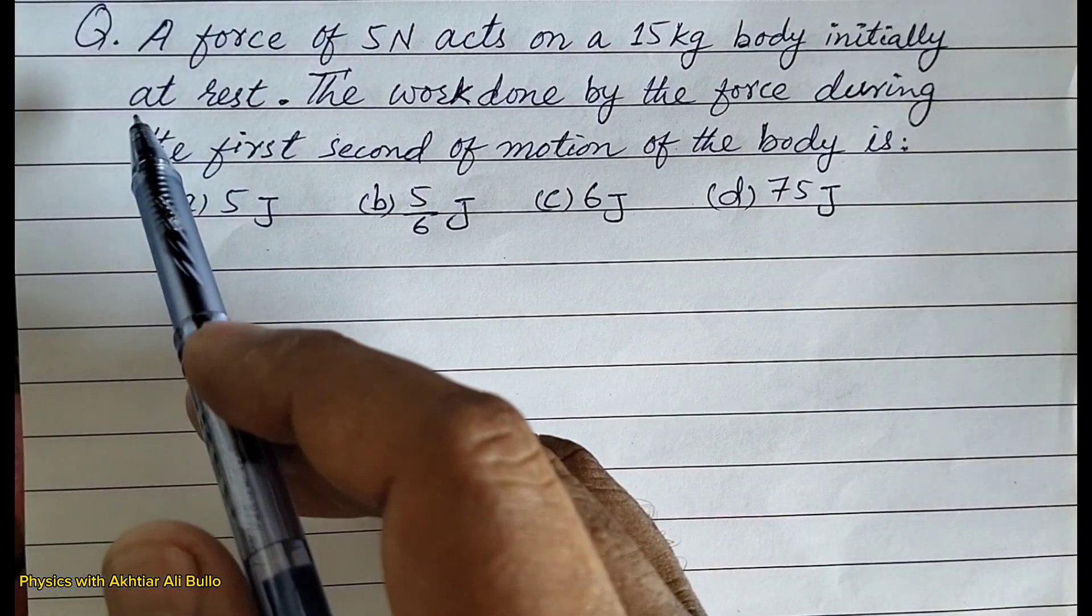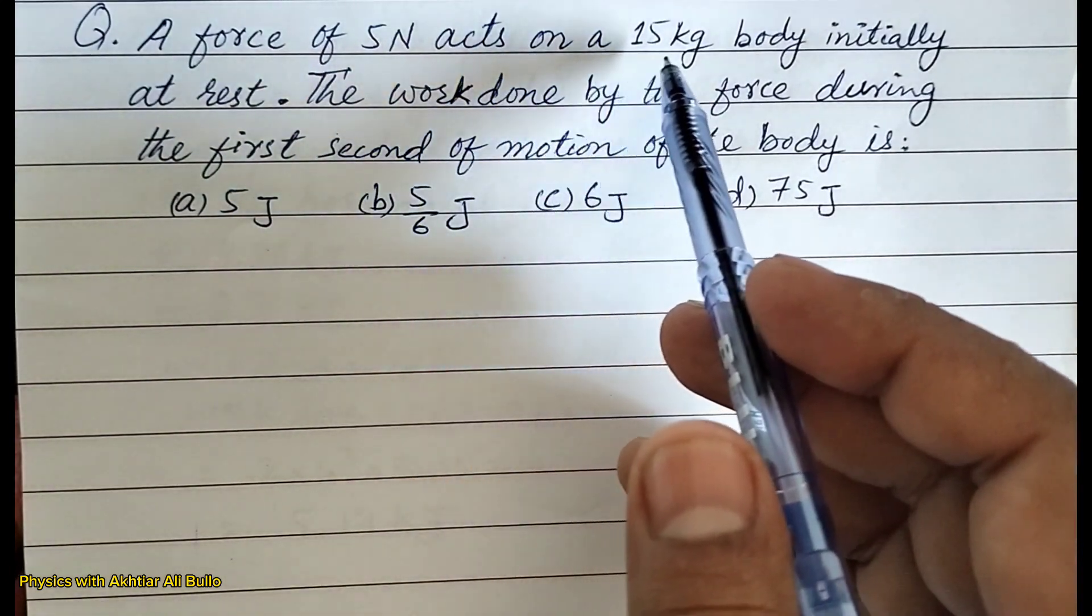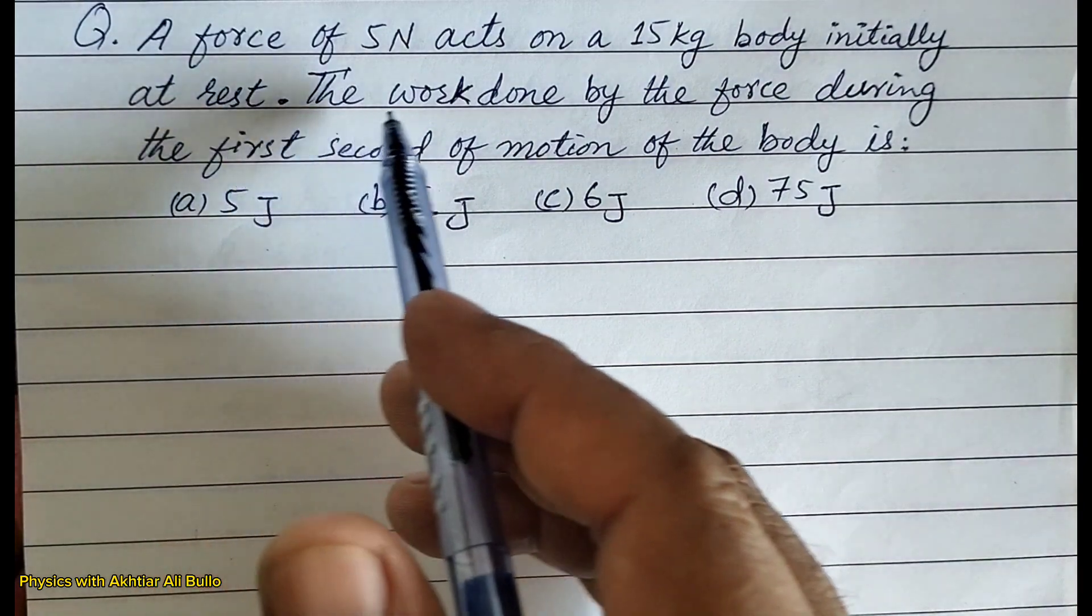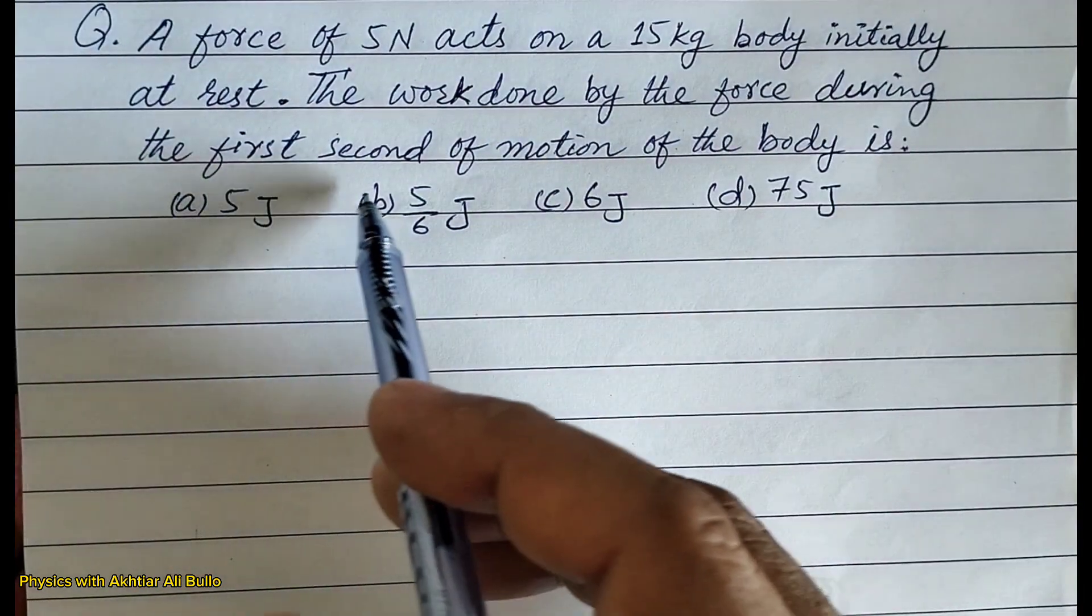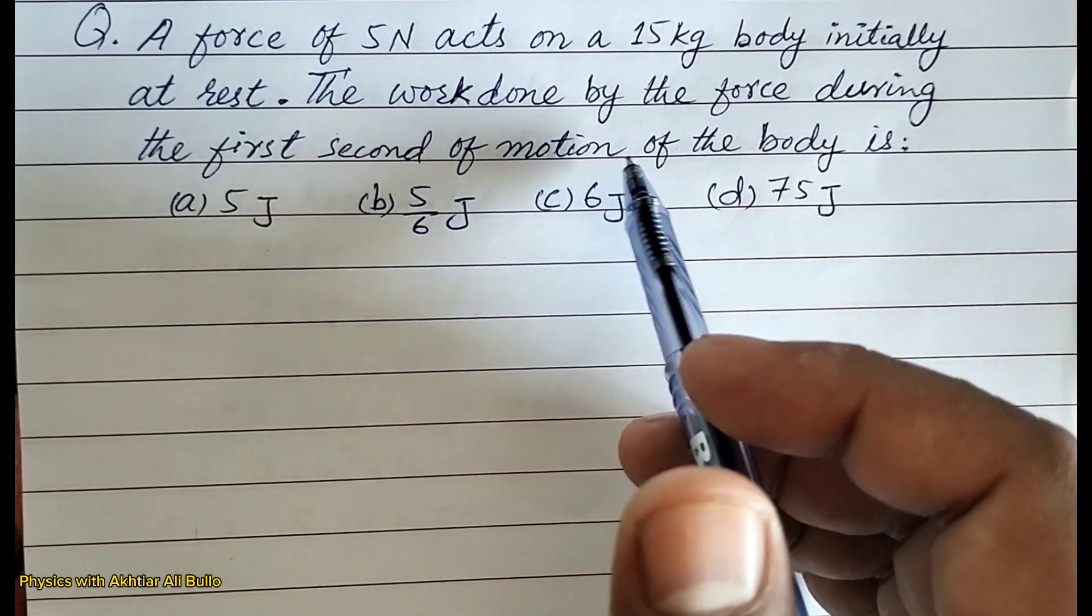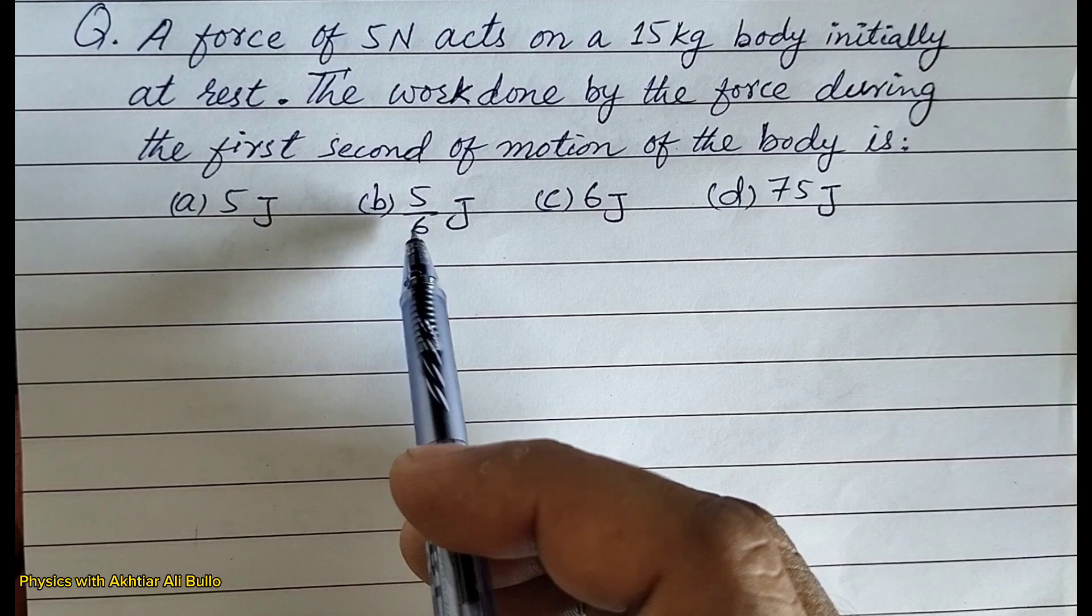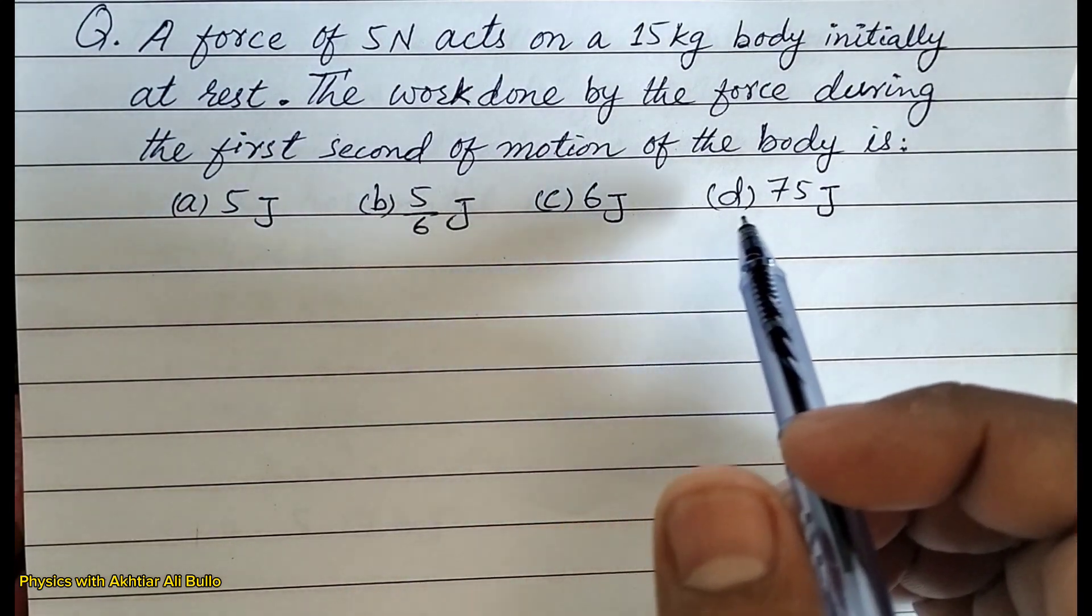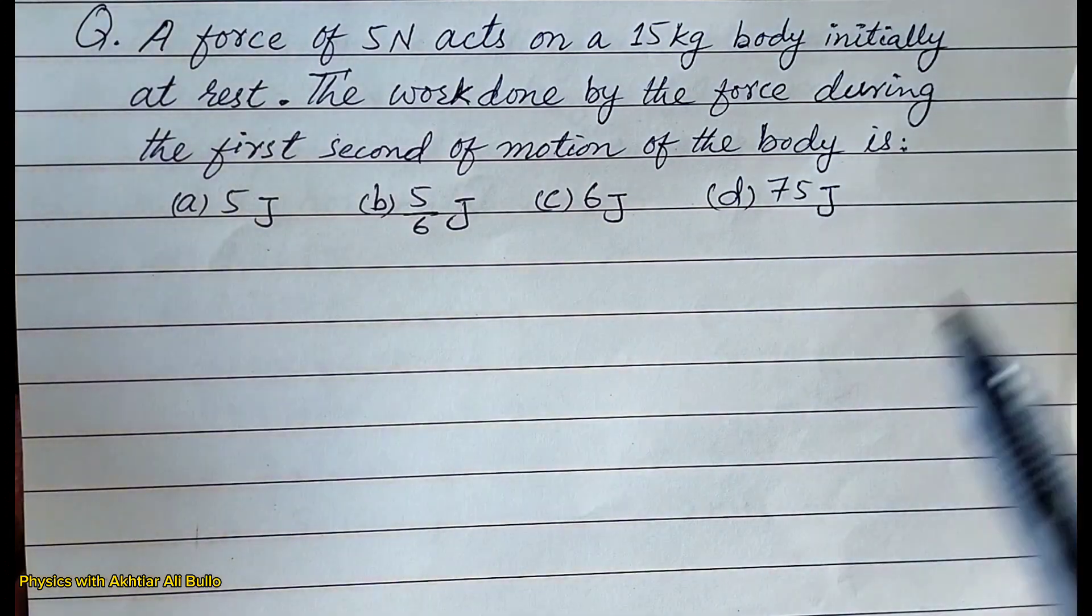The question is: A force of 5 Newton acts on a 15 kg body initially at rest. The work done by the force during the first second of motion of the body is: (a) 5 joule, (b) 5/6 joule, (c) 6 joule, (d) 75 joule.